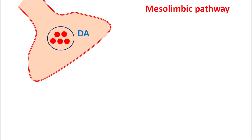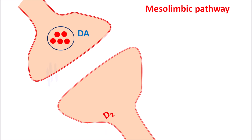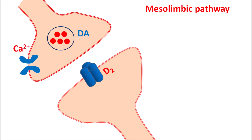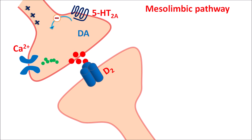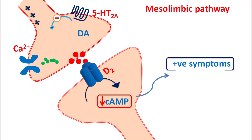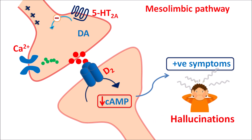At the mesolimbic pathway, dopaminergic neurons play an important role. The presynaptic neuron stores dopamine, and the postsynaptic neuron has D2 receptors. Calcium entry triggers dopamine release via exocytosis. Dopamine acts on D2 receptors, which are inhibitory — they reduce cyclic AMP levels, decreasing excitatory responses, resulting in positive symptoms such as hallucinations and delusions. Overactivity of dopamine in the mesolimbic pathway mainly produces positive symptoms.